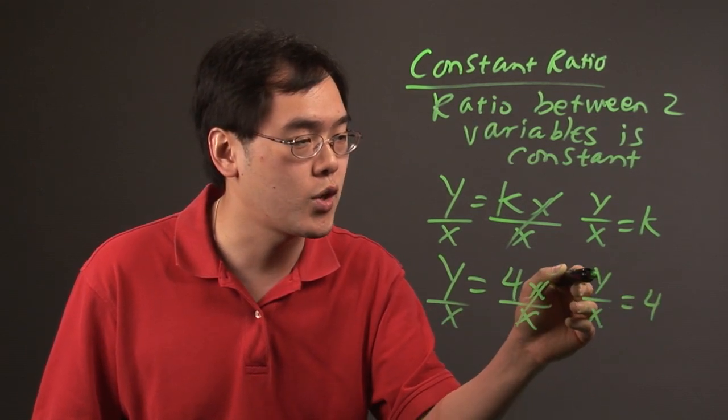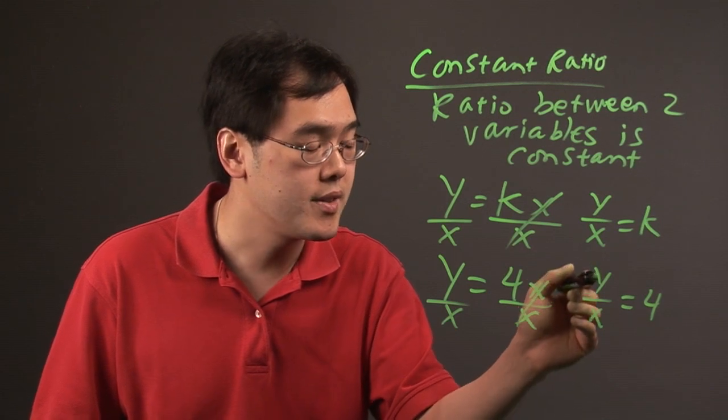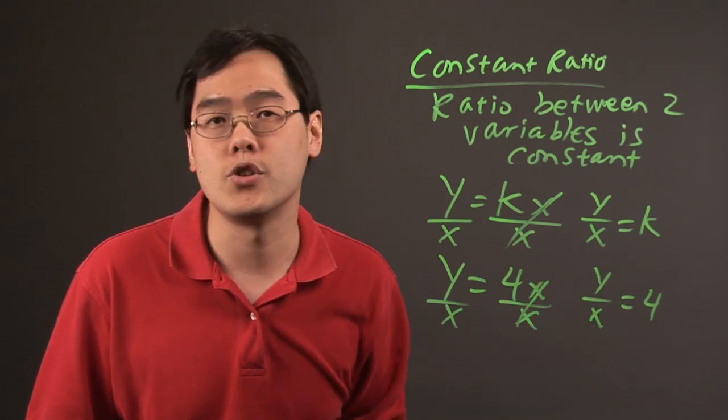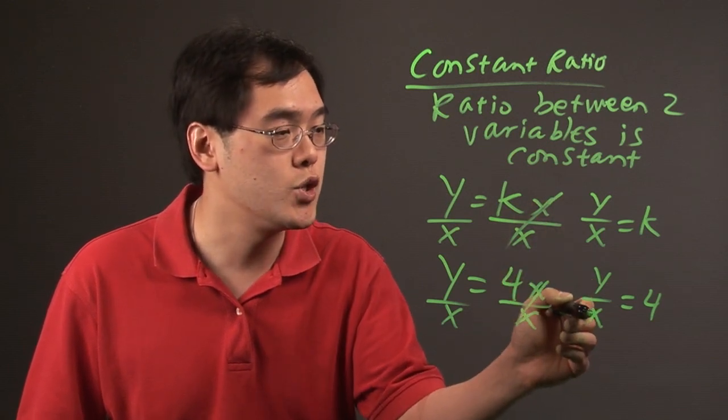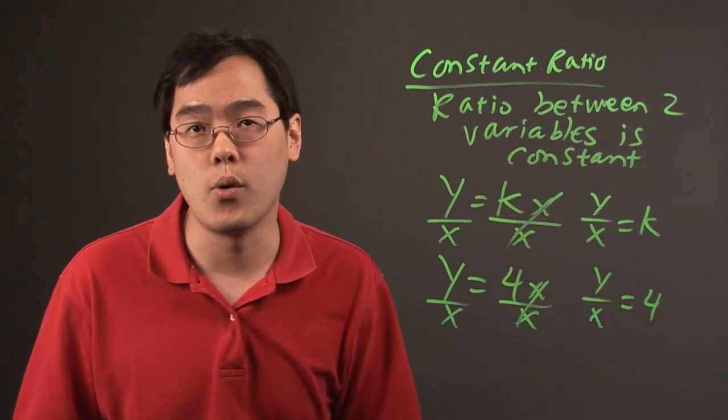That means if you take the ratio of y and x, the number that separates the two is 4. The ratio between these two variables is that constant 4.